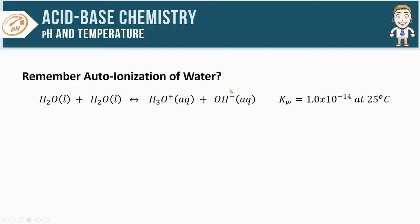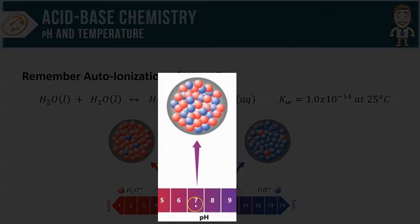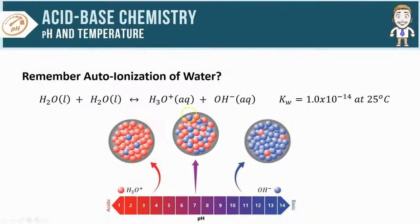One of those relationships is that a neutral solution, which we think of as having a pH of 7, is going to have equal amounts of H3O+ and OH-. So let's start off and take a look at some of the thermodynamics of this auto-ionization process.